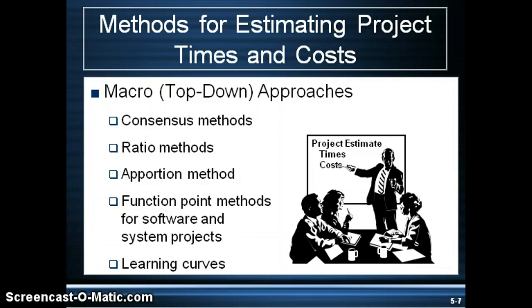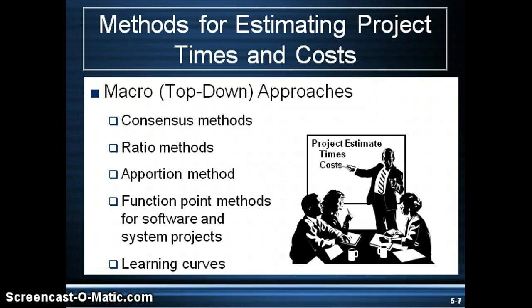The next method is the ratio method, also called parametric estimating. This is where you utilize past data to estimate project duration and cost. For example, if it takes ten days for one crew to install a thousand feet of fence, then it should take only one day for ten crews to install a thousand feet of fence. Another example is estimating the cost of building a house — often they estimate by dollars per square foot, say a hundred dollars per square foot, so you multiply the hundred dollars by the two thousand square feet to get your number.